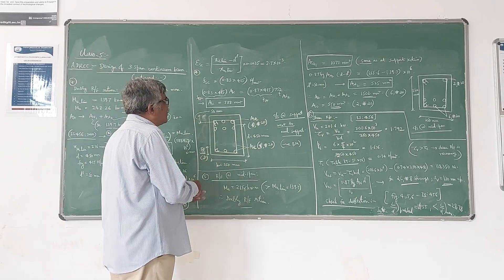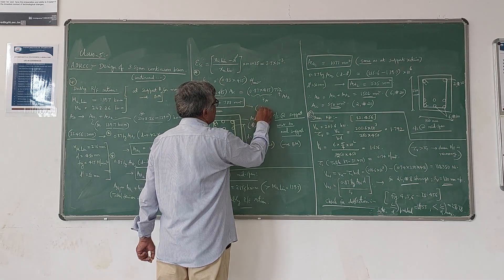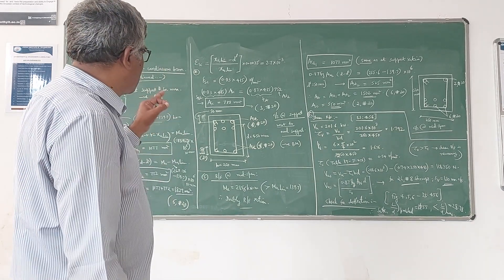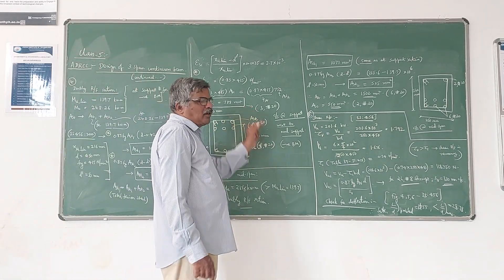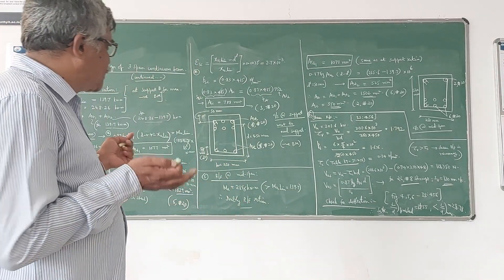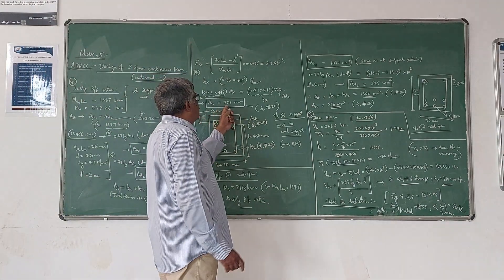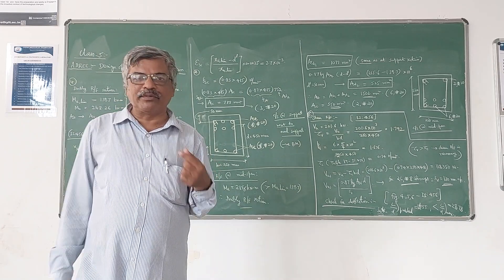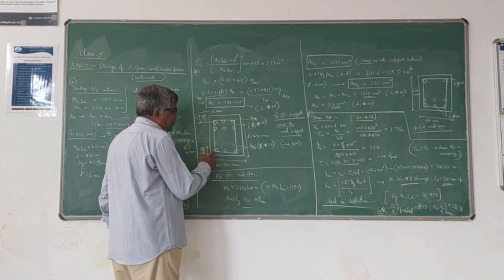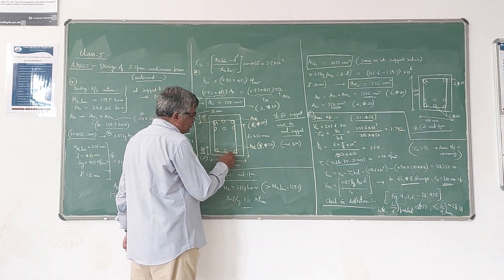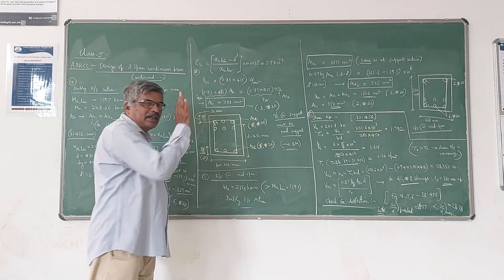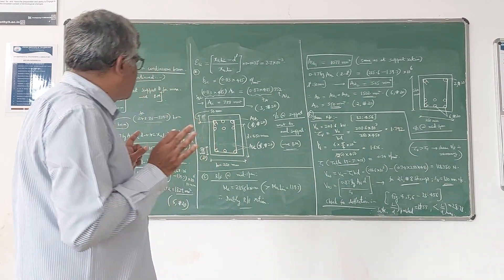For the 788 mm² compression steel, we can provide 3 bars of 20 mm diameter: 3 × (π/4) × 20² is slightly more than 788 mm². You can also vary the diameter — 22 mm or 25 mm diameter bars are acceptable, as long as the area is not too much higher than required. Since the moment is negative, bottom is subjected to compression, so ASC is provided at the bottom. This completes the main reinforcement design at the support section.